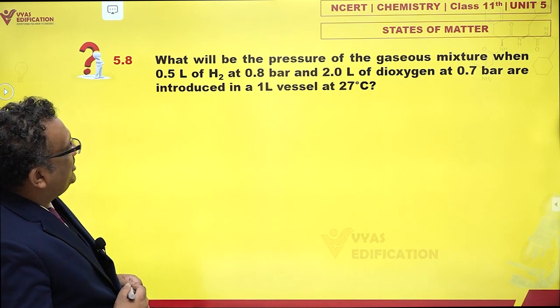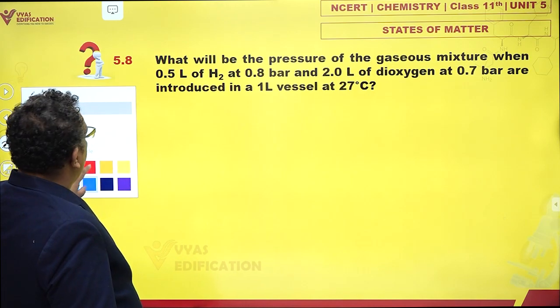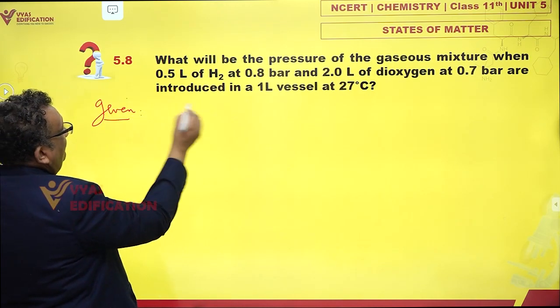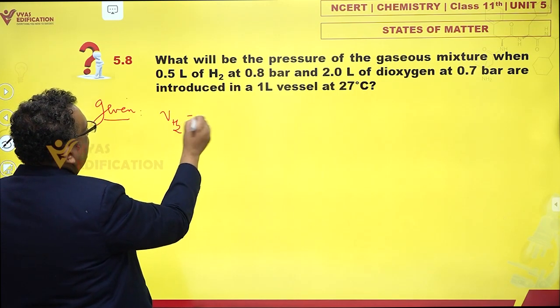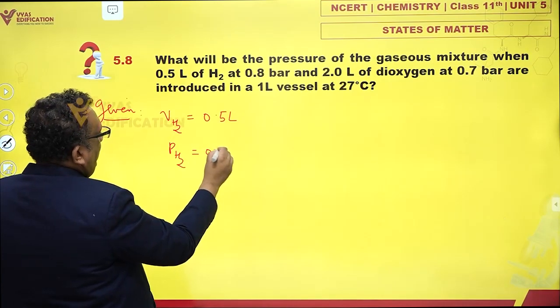What will be the pressure of the gaseous mixture when 0.5 L of H2 at 0.8 bar and 2.0 L of dioxygen at 0.7 bar are introduced in a 1L vessel at 27°C? Let me note down what is given: volume of hydrogen is 0.5 liters, pressure of hydrogen is 0.8 bar.